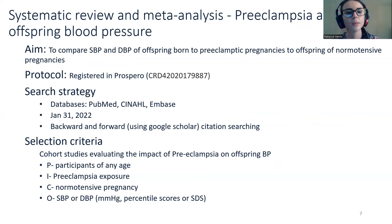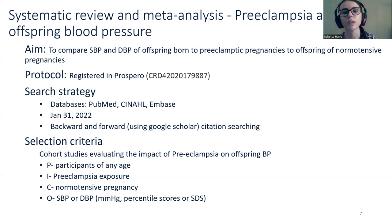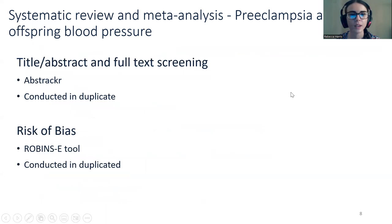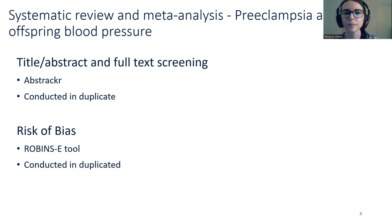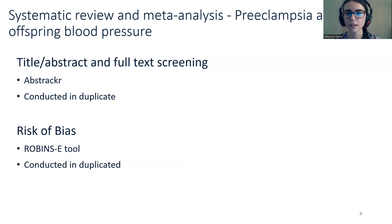For our selection criteria, participants could be any age — from infancy to older age — and were included if they reported systolic or diastolic blood pressure on a continuous scale, which could be millimetres of mercury, percentile scores, or standard deviation scores. We conducted title and abstract screening using Abstrackr, done by two review authors independently in duplicate. To assess within-study risk of bias, we used the ROBINS-E tool for observational studies, again conducted by two review authors in duplicate.